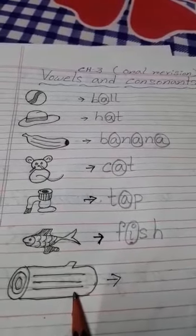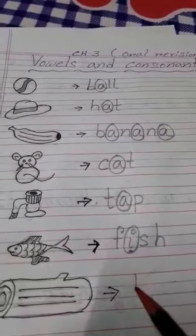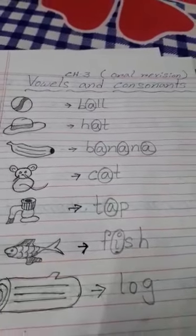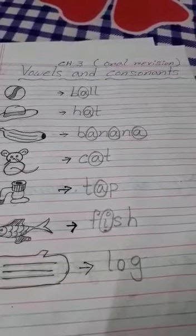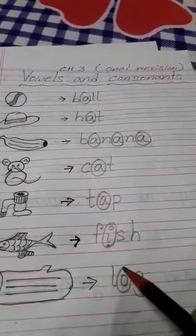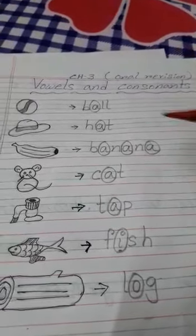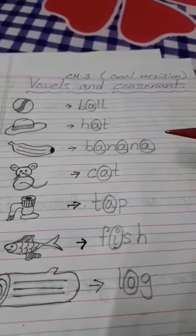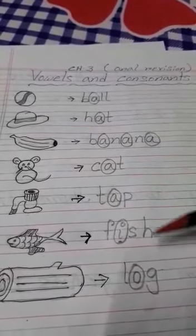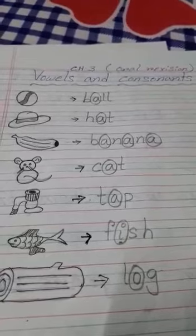Next one. This is a log. Spelling of log. L-O-G, log. Now, tell me which is vowel here? O is a vowel. So, you have to circle it. Okay, children? Like this. If I tell you to circle or underline the vowels, you have to do like this way. Understood? This is for your oral revision.